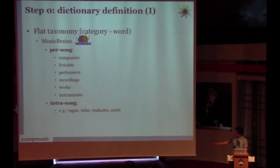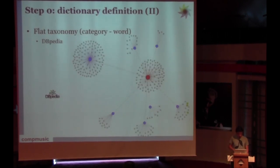We get all the information that is per song, composers, lyricists, recordings, works, or intra-song information like ragas, talas, makams, usuls. And we also use information from DBpedia. DBpedia is a database of structured machine-readable descriptions of articles in Wikipedia. For example, this is an example of how categories are defined for Carnatic music in DBpedia.